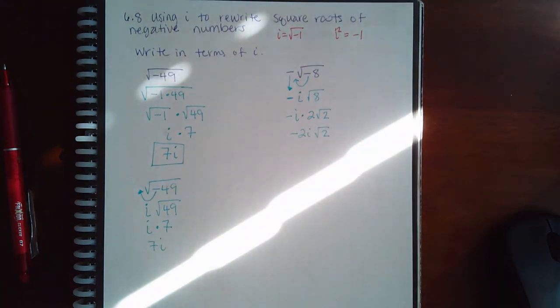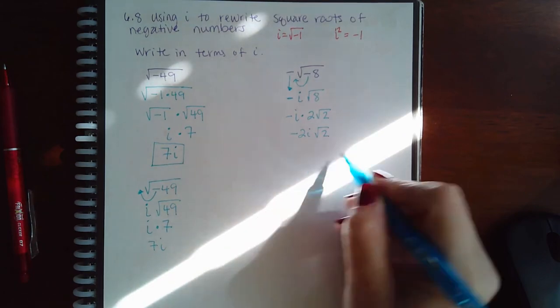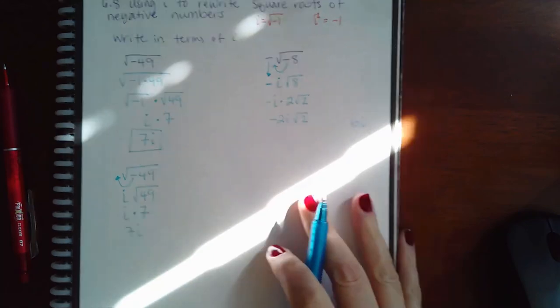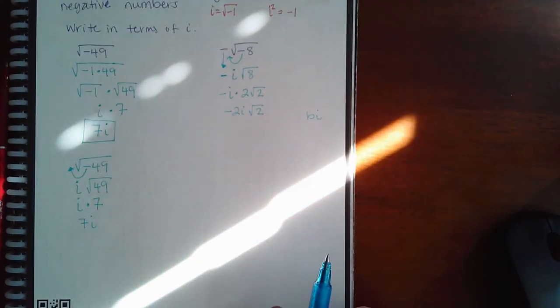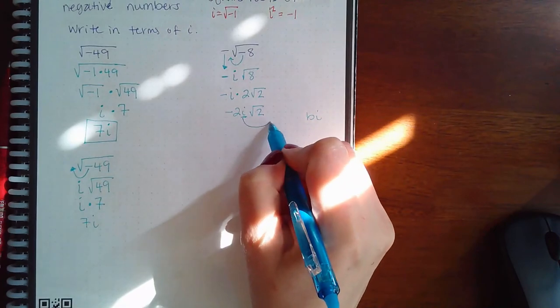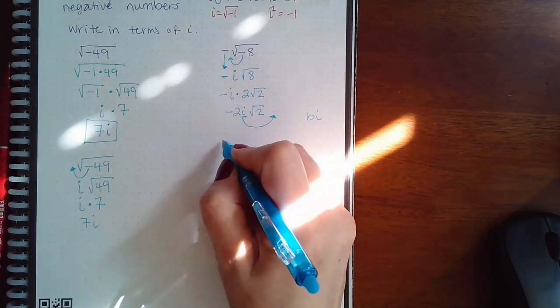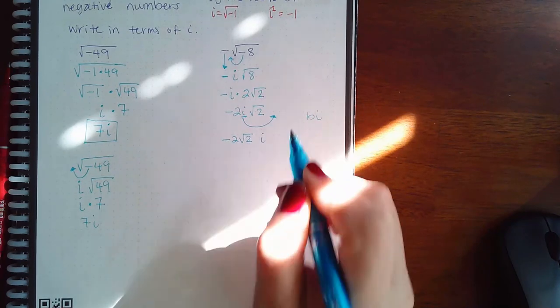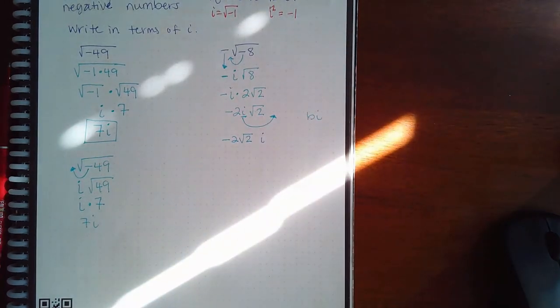Sometimes eventually what they'll want is they'll want you to write your numbers in the form B i. So what that means is they like this i after the entire number, so they like to see negative two square root of two and then the B i on the side.